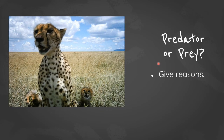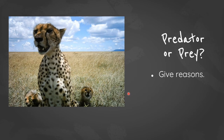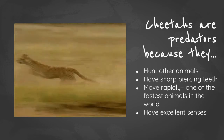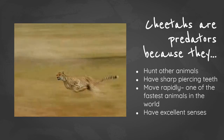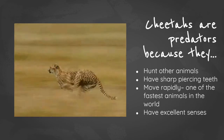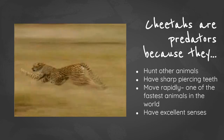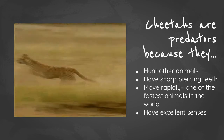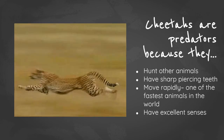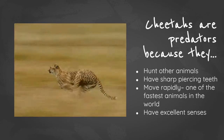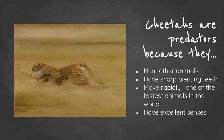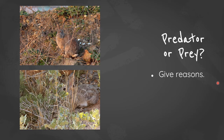Looking at an image: would you consider this animal a predator or prey, and why? Cheetahs are predators — they hunt other animals and have very sharp, piercing teeth to dig deep into the flesh of their prey. They are able to move rapidly; in fact, cheetahs are one of the fastest animals in the world and have excellent senses for hunting. What about this next animal — predator or prey?